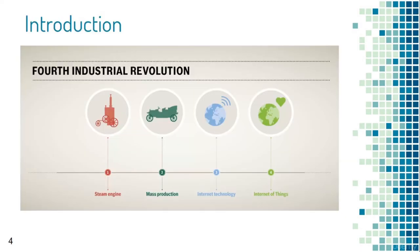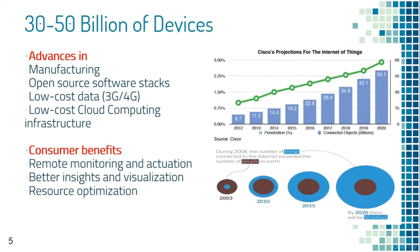IoT has set the stage for the fourth industrial revolution. Advances in manufacturing and open source software have made it possible for embedded systems, actuators, and embedded sensors to communicate via the Internet. The cost of 3G and 4G data and cloud computing infrastructure are going down, making adoption of such devices far easier. As a result, Cisco projects 50 billion connected devices by 2020. Consumers benefit from remote monitoring and actuation, better insights through next-generation data processing tools.